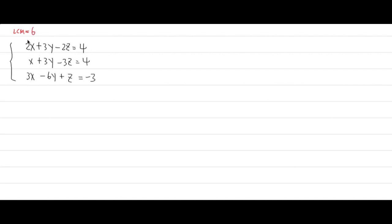Your target is to make sure everything in front of the x is going to be 6. I have 2x here, and 2 times 3 is 6, so I multiply the first equation by 3. For the second equation, I have just 1, so I need to multiply by 6 — but since the first equation gives positive 6x, I'll multiply the second equation by negative 6 to produce negative 6x.